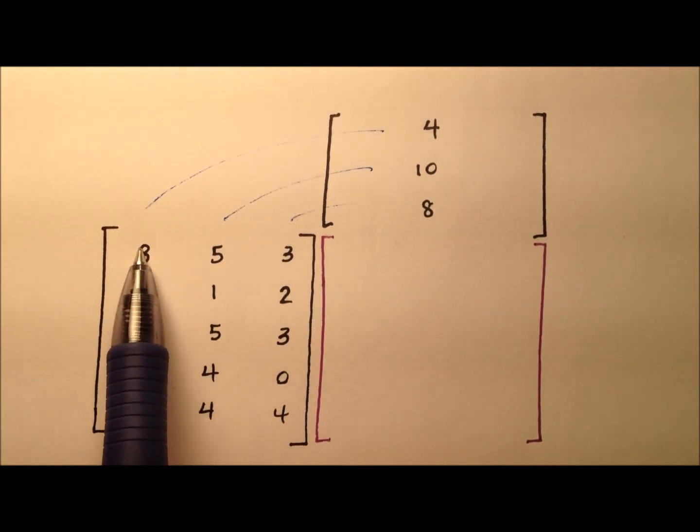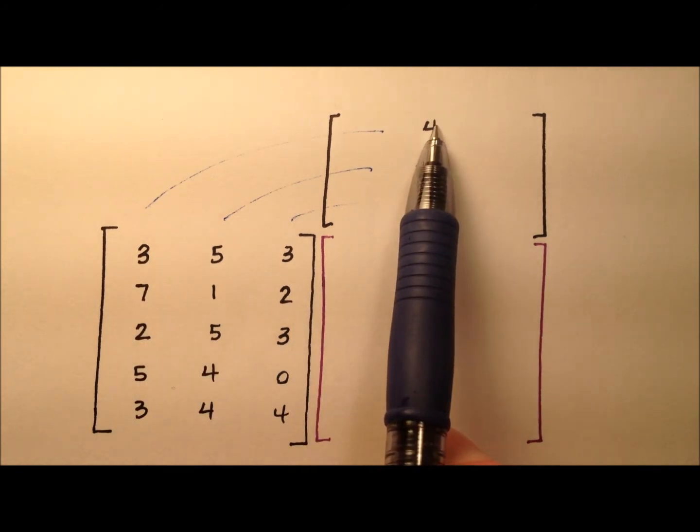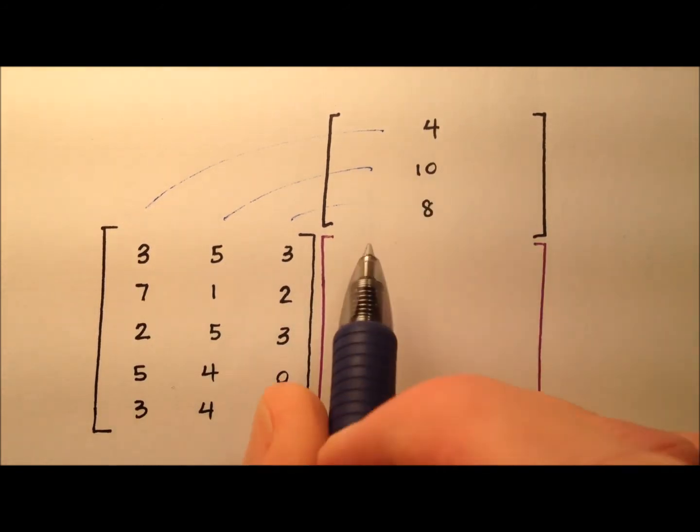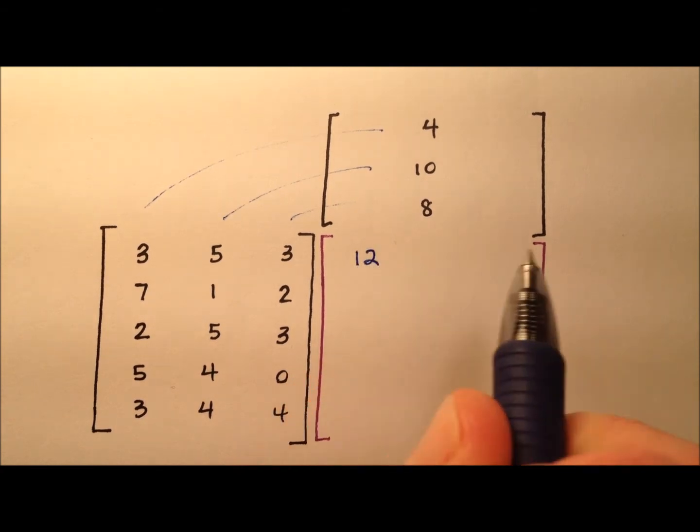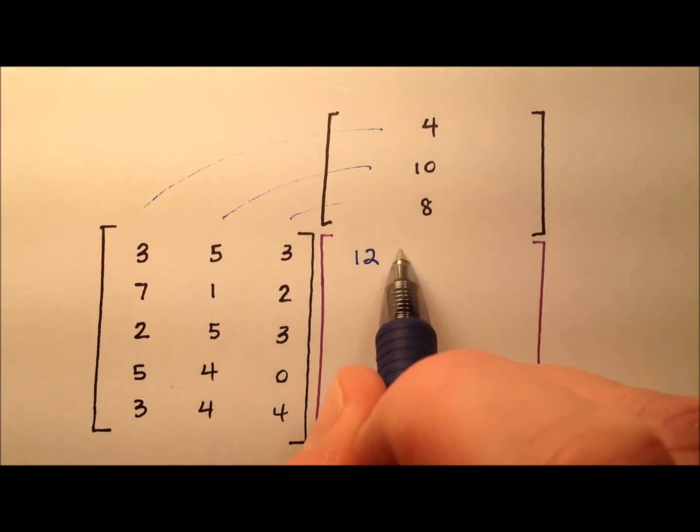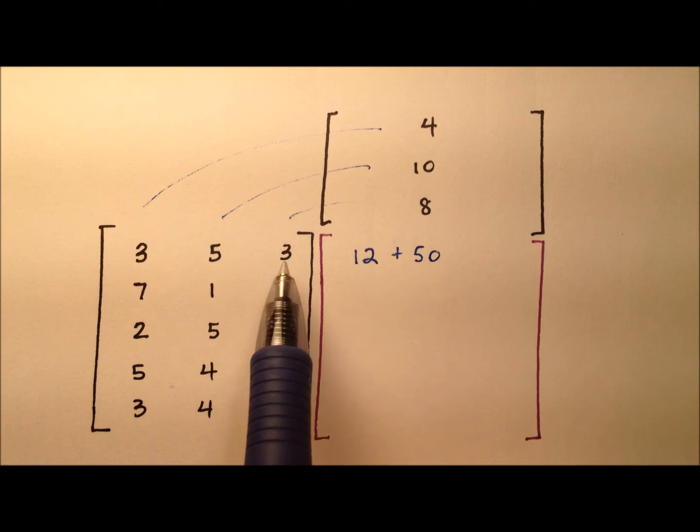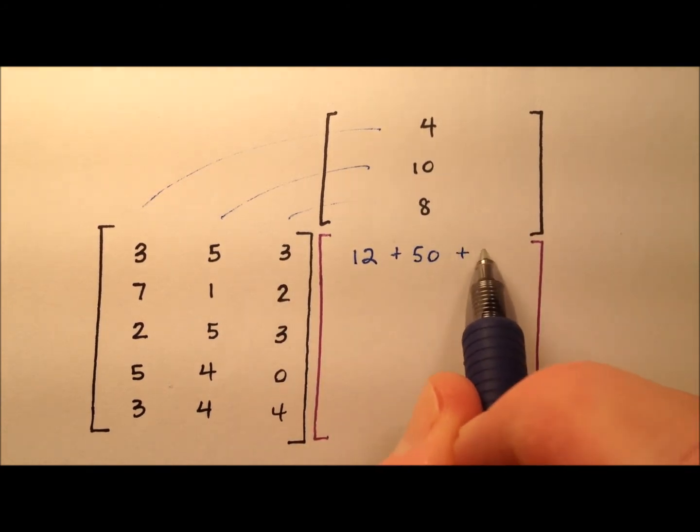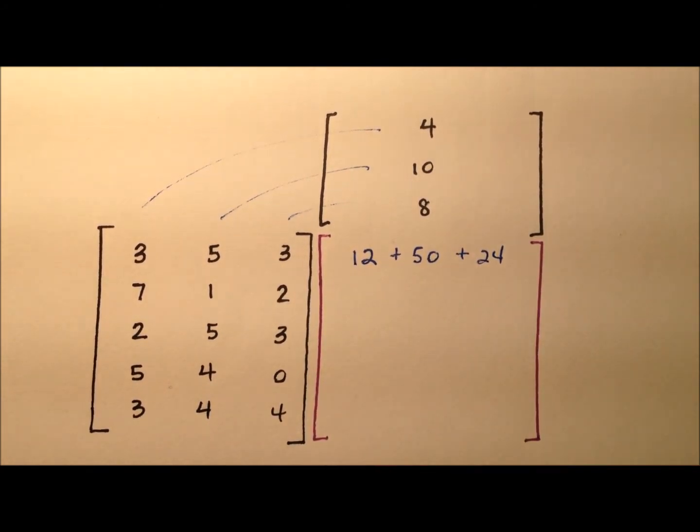The first entry in the first row, and then the first entry in this column. So three times four is 12. And then the next one, five times 10 is 50. And the last one, three times eight is 24. That's what we talked about a while ago, and we just add them all up to figure out how much she made on Monday.